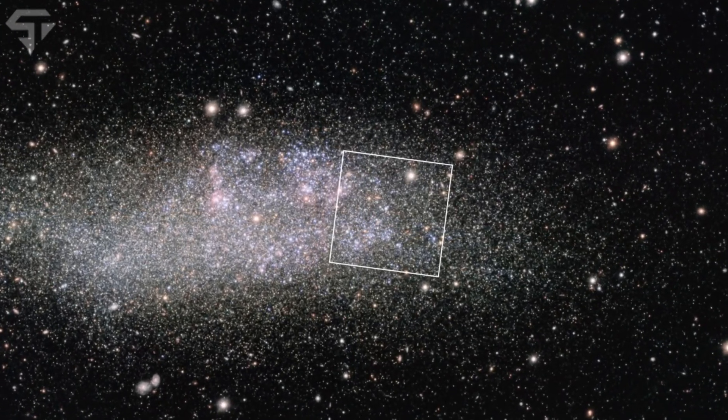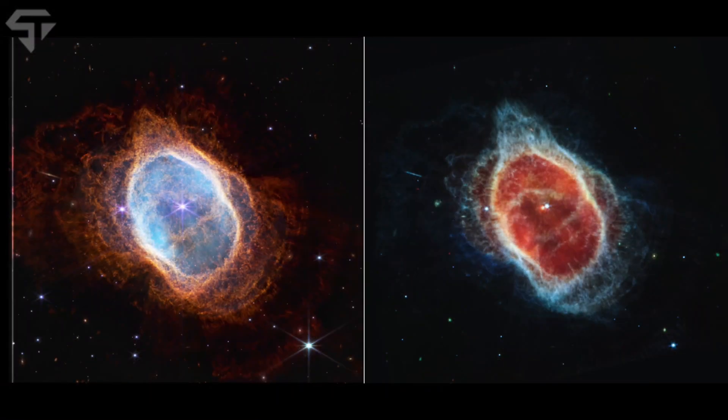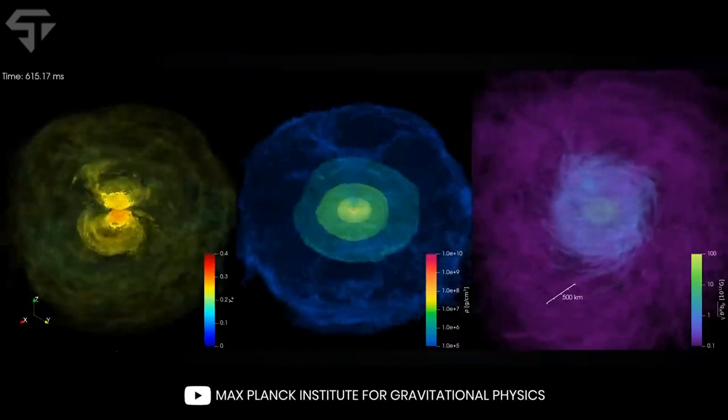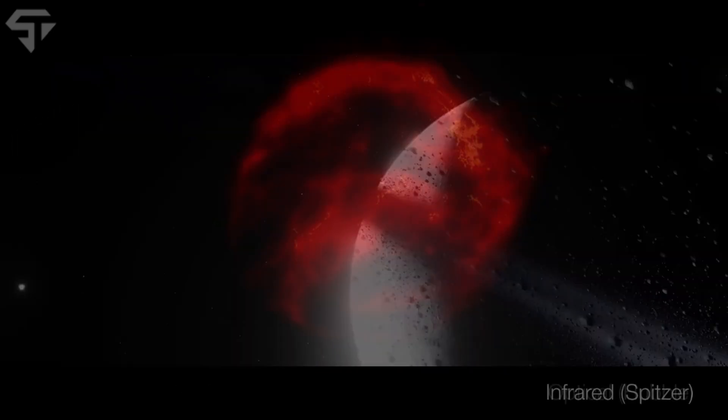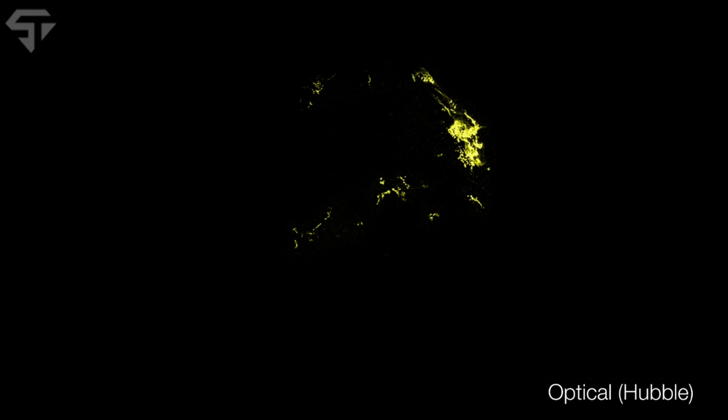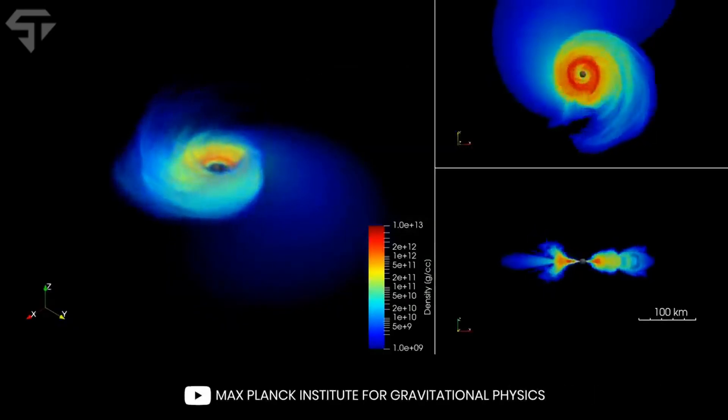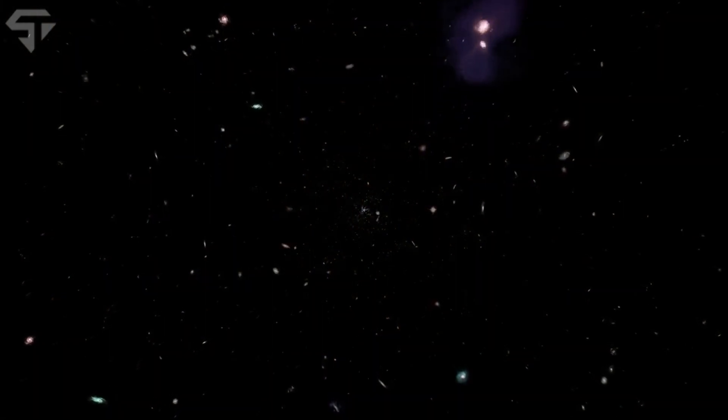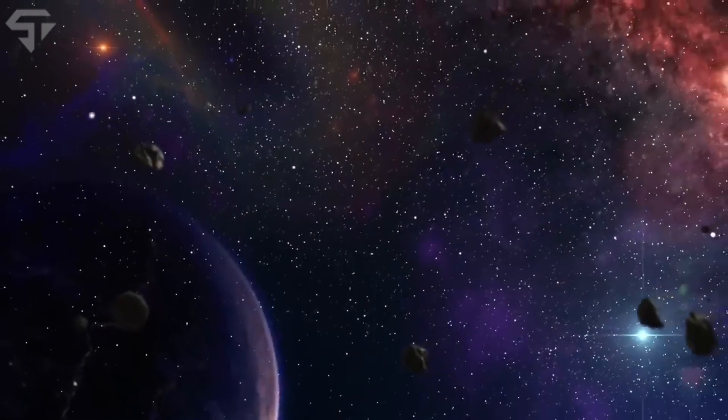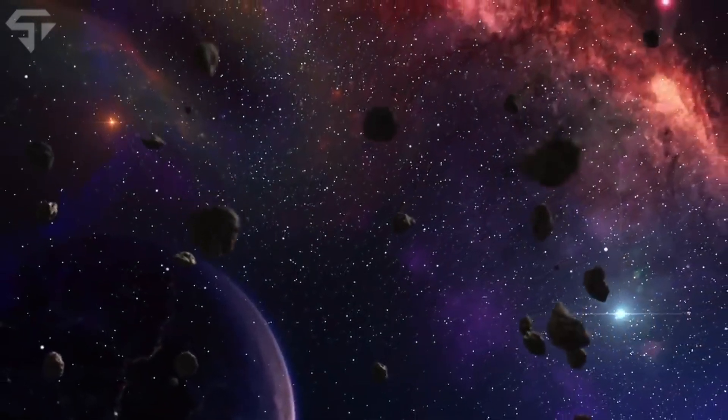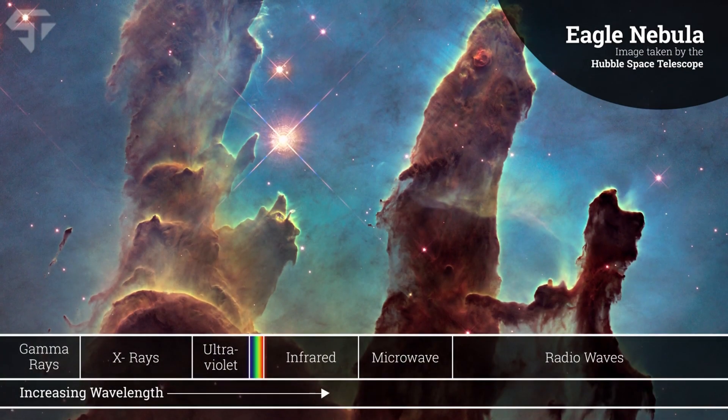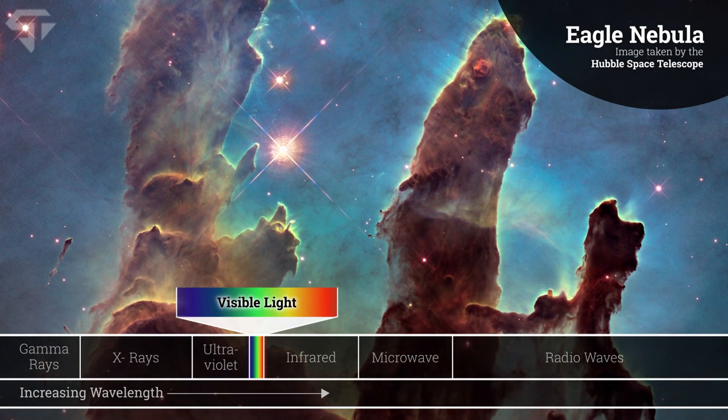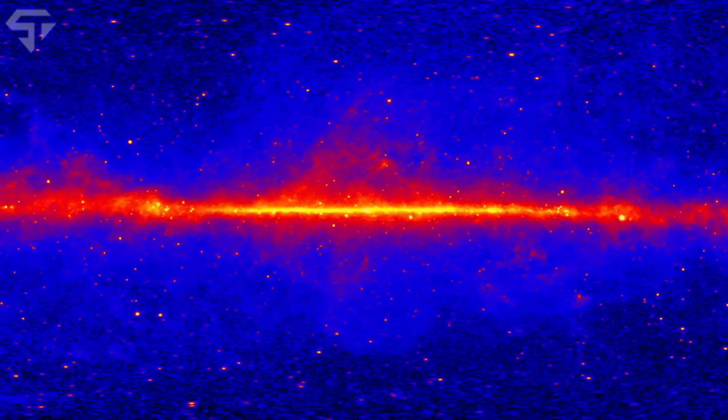But the universe isn't standing still. It's expanding at an accelerating rate, and this could have huge implications for the future. Will it continue expanding forever, growing colder and emptier? This idea is known as the heat death of the universe, where all stars burn out and the universe becomes a dark, lifeless void. Or could the universe eventually collapse in on itself in a Big Crunch? This is another theory where gravity might one day pull everything back together in a massive implosion. The ultimate fate of the universe is one of the biggest unsolved mysteries in cosmology.